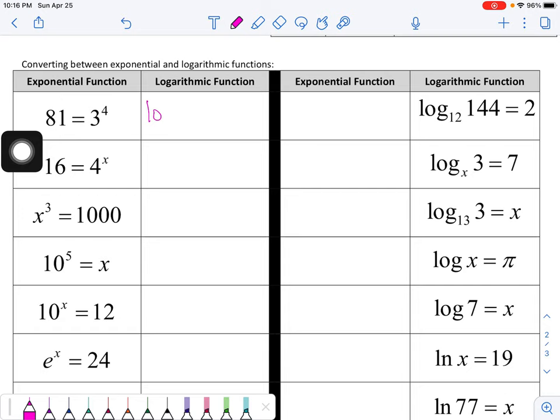So 3 to the 4th is equal to 81. So this would be log base 3 of 81 is equal to 4. 4 to the x is equal to 16. So log base 4 of 16 is equal to x. You don't have to solve any of these. We're just rewriting. x to the 3rd is equal to 1,000. So log base x of 1,000 is equal to 3.